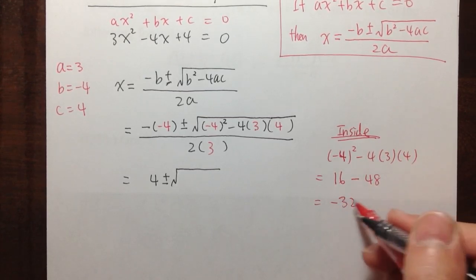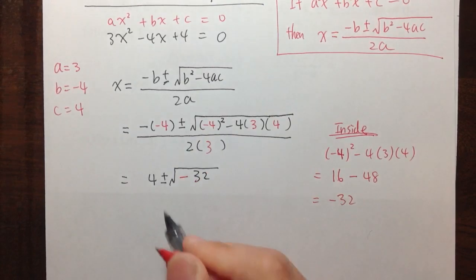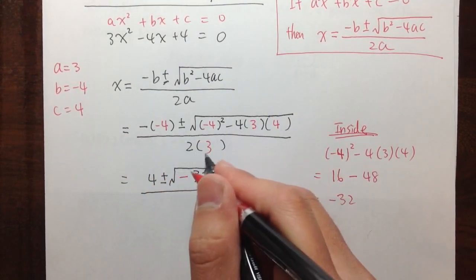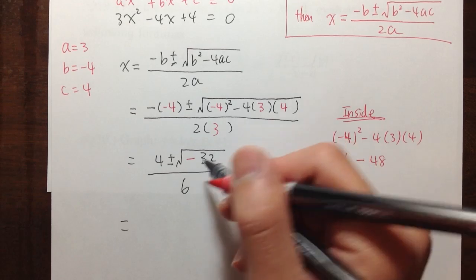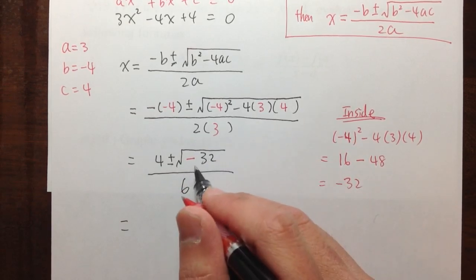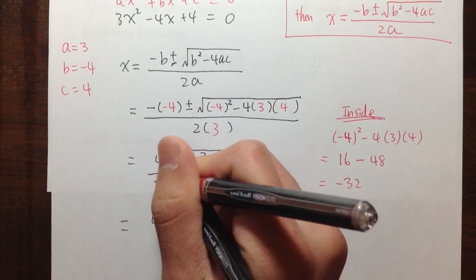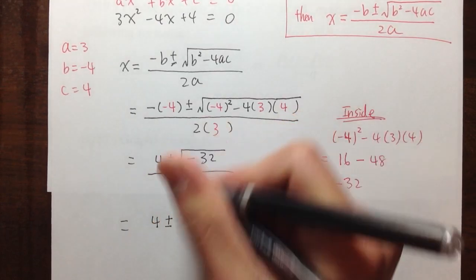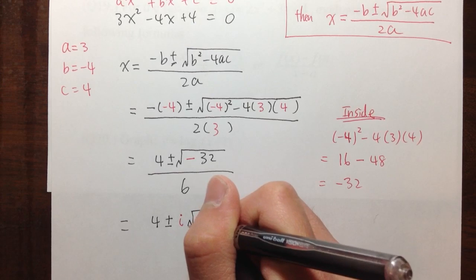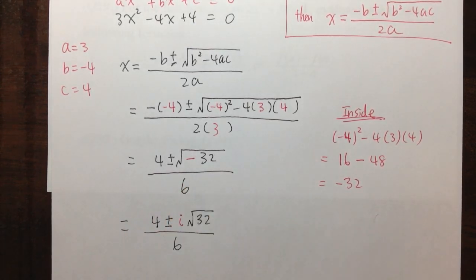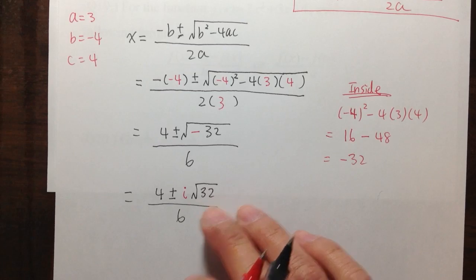So negative 32 is what goes inside of the square root, over 2 times 3, which is 6. We have a little issue here because we have a negative inside of the square root. So I will take out the negative by putting an i — an imaginary number i. The 4 stays the same, plus or minus, I write the i, and keep the square root of positive 32 over 6. So far I have 4 plus or minus i times square root of 32, over 6.